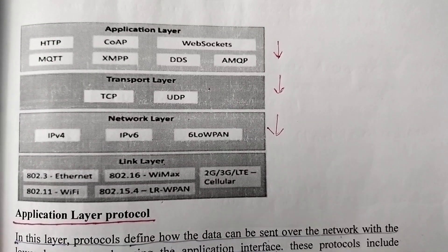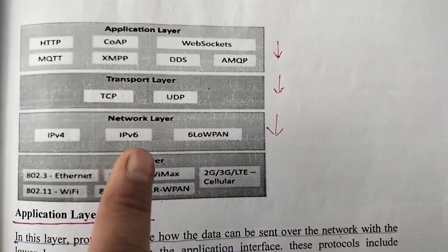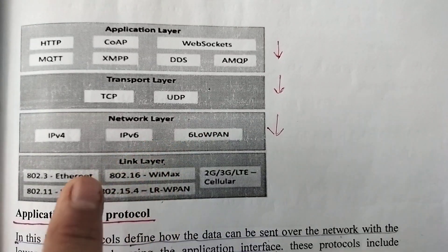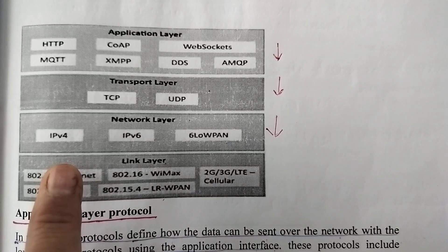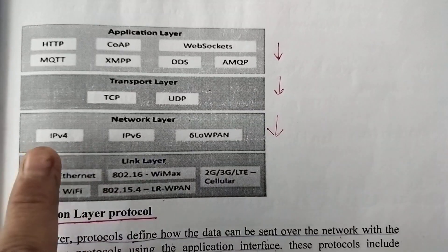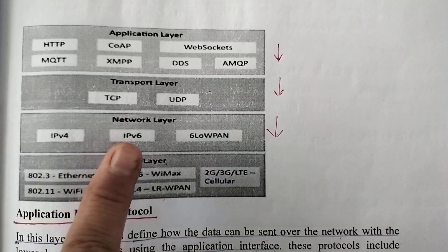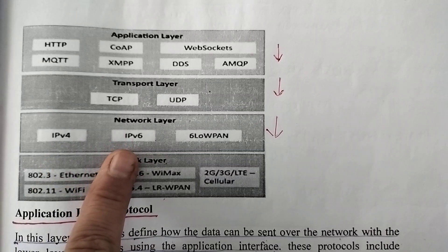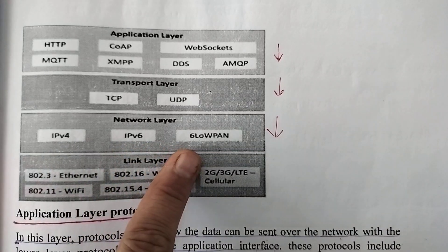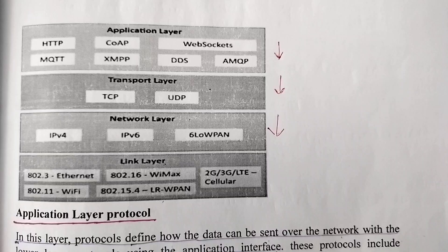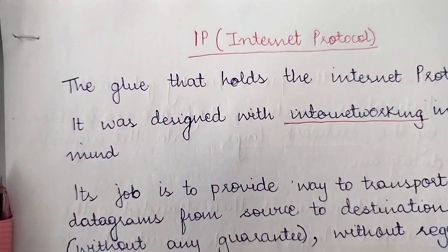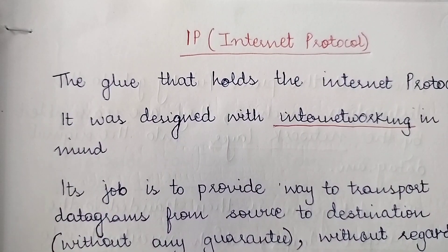Hi everyone, today we are going to study the network layer protocols used in IoT. The protocols which are used in the network layer for IoT are the IP version 4 protocol, IP version 6 protocol, and 6LoWPAN. Let us look at these three protocols in detail. First of all we will see the IP protocol.